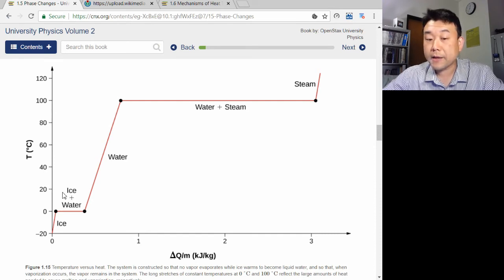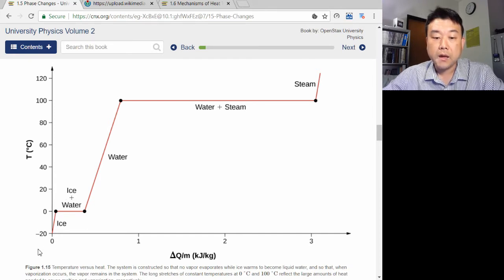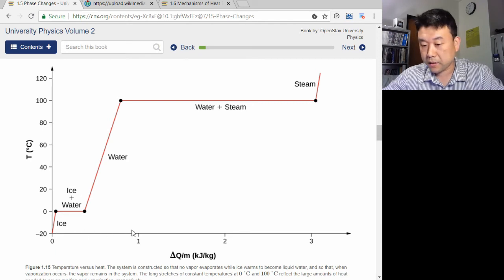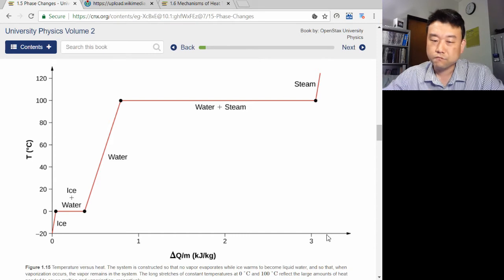This is a plot of temperature of a substance, which starts out as ice at minus 20 degrees Celsius. And you start to apply heat. On the horizontal axis, we are plotting the amount of heat added per mass. We can imagine we have 1 kilogram ice to start out with. So this would be 1 kilojoule, 2 kilojoules and so on.